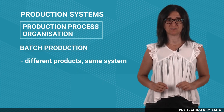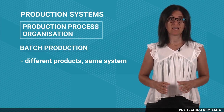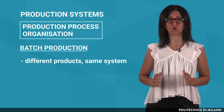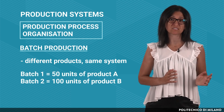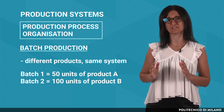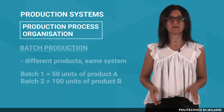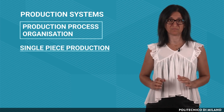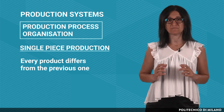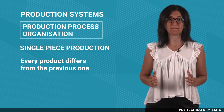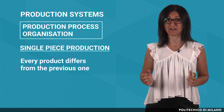Batch production: different products are manufactured in the same system. Batches consist of groups of the same items — for example, we produce 50 units of product A, then 100 units of product B, and so on. Single-piece production: every product differs from the previous one. This can be due to the fact that the company makes unique, strongly customized products, for example, airplanes.